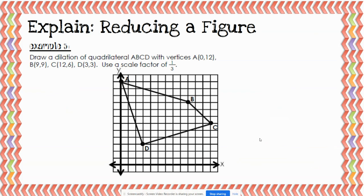Example three says: draw a dilation of quadrilateral ABCD with vertices at A(0,12), B(9,9), C(12,6), and D(3,3). We are going to use a scale factor of one third. Because the scale factor is one third, we take each coordinate and multiply by one third. Remember that multiplying by one third is the same as dividing by three.